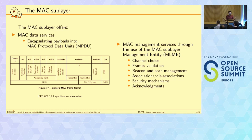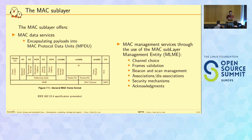The MAC sublayer, which sits above, has two kinds of services. One is a data service — just sending or forwarding the data by encapsulating the payload received into a MAC frame, the MPDU or MAC protocol data unit. This MAC frame contains a frame control field at the beginning, which defines the frame for the peer: what type of frame it is — whether it's an acknowledgement, a data frame, a MAC command, and so on. It also defines which other fields are present, since almost all of them are optional depending on the frame type and configuration.